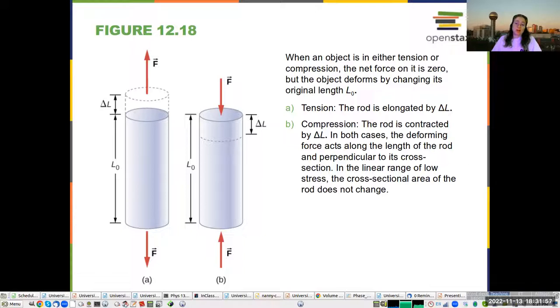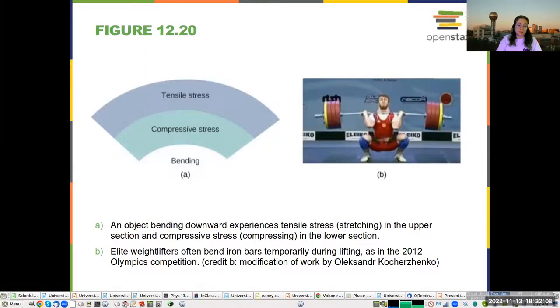So the tension can cause something to be elongated or compressed, depending on the forces that are on it. An object bending downward experiences tensile stretch, so it's being stretched in the upper section and compressive stress, so it's being squished in the bottom part.